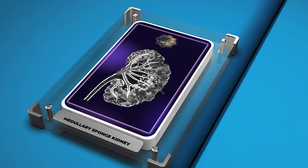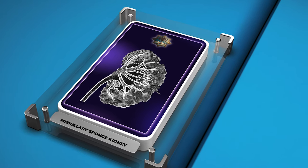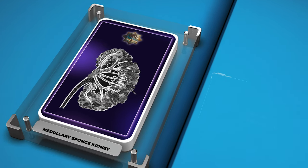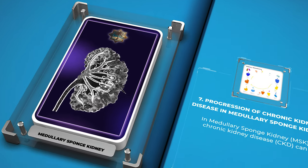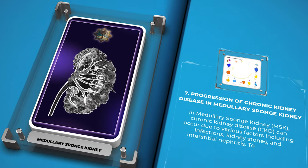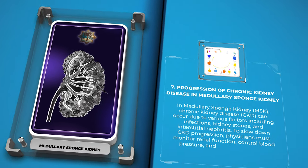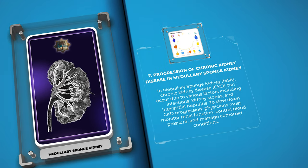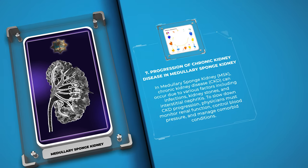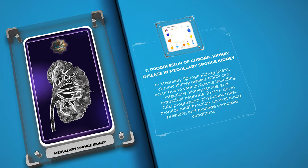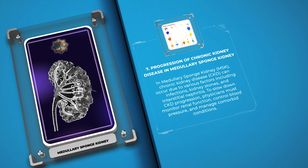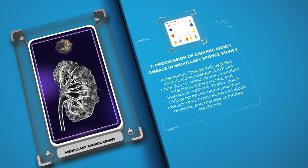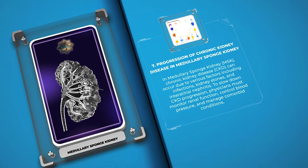In medullary sponge kidney, MSK, chronic kidney disease, CKD, can occur due to various factors including infections, kidney stones, and interstitial nephritis. To slow down CKD progression, physicians must monitor renal function, control blood pressure, and manage comorbid conditions.